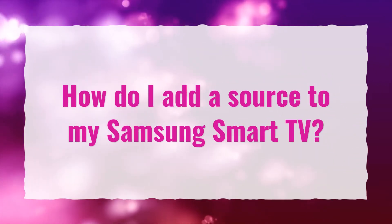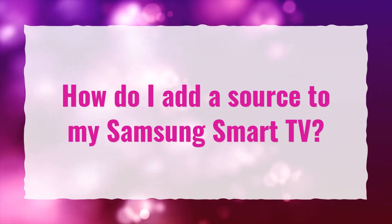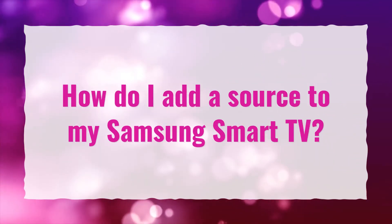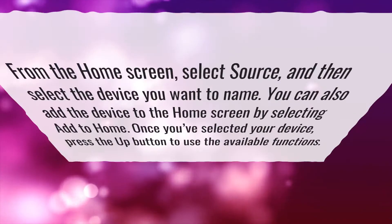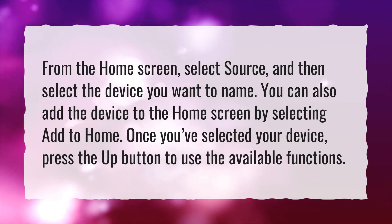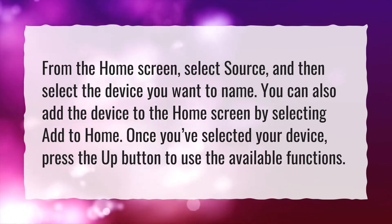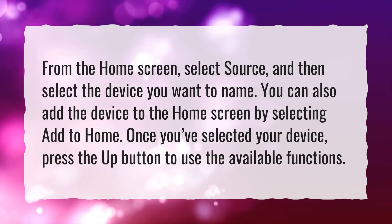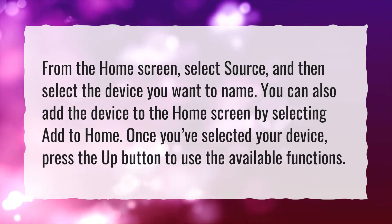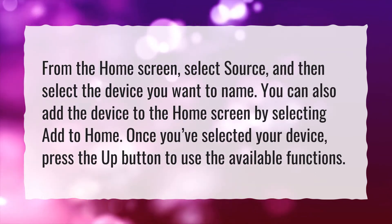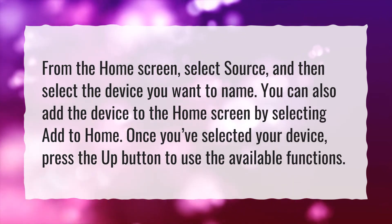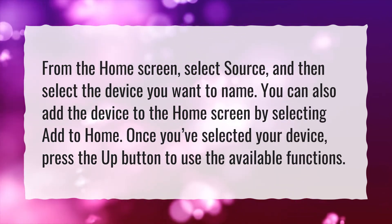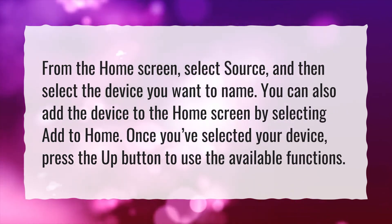How do I add a source to my Samsung Smart TV? From the home screen, select source, and then select the device you want to name. You can also add the device to the home screen by selecting add to home.